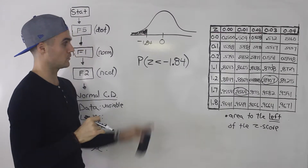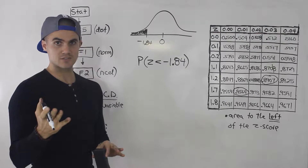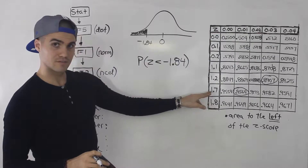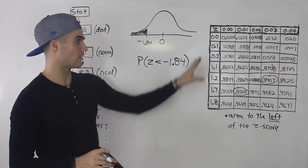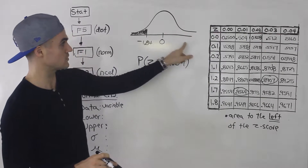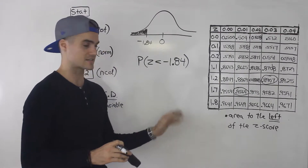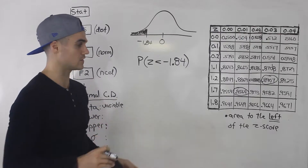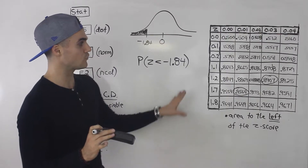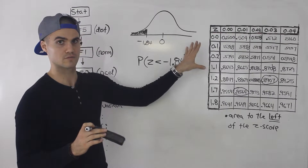A couple of issues I want to talk about with this specific question. This one's unique because it's a negative number. Depending on the stats course you're taking, depending on your prof, they may allow you to use a z-table that has negative z-scores as well as positive ones. There are actually two z-tables: one for positive z-scores and one for negative z-scores. They work exactly the same way — they just give you the area to the left of that z-score. But a lot of times, certain stats courses, the prof only allows you to use a table with positive z-scores.